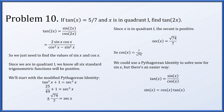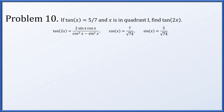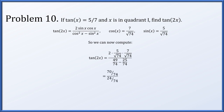So we're using the identity tangent of 2x equals 2 sine x cosine x over cosine squared x minus sine squared x. With cosine of x equal to 7 over root 74 and sine of x equal to 5 over root 74, it's just a matter of plugging in. In the numerator we have 2 times 5 times 7 over 74, and in the denominator 49 minus 25 over 74. The 74s cancel, and we simplify this to 35 over 12.